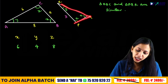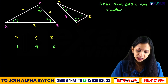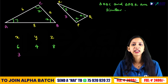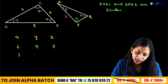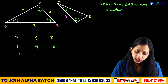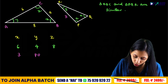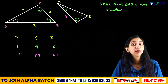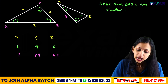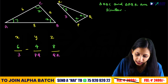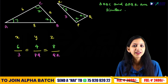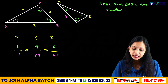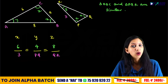In triangle PQR, angle X is opposite side 3, angle Y is opposite side PQ, and angle Z is opposite side QR. Since equal angles have opposite sides in the same ratio, we set up: 6 by 3 equals 4 by PQ equals 8 by QR.